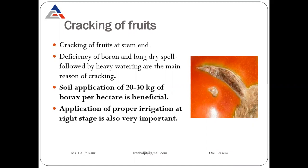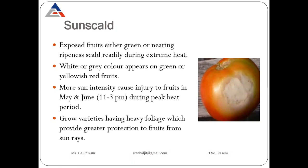Next is cracking of fruits. Cracking at the stem end occurs due to deficiency of boron and when there are long dry spells followed by heavy irrigation. This is the main reason of cracking. To control it, apply boron at the rate of 20 to 30 kg as soil application, and apply proper irrigation at the right stage to avoid cracking of fruits.